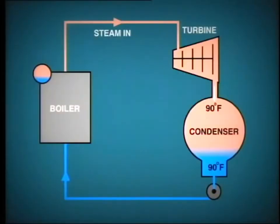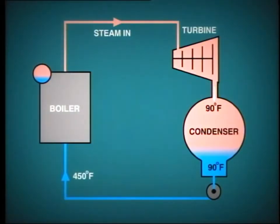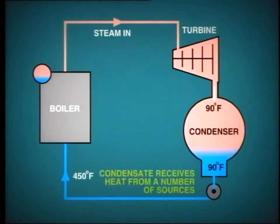By the time this condensate enters the boiler as feedwater, the temperature will be in the region of 400 to 500 degrees Fahrenheit, thus requiring less heat to be added in the boiler. During its passage from the condenser hot well to the boiler feedwater inlet, the condensate receives heat from a number of sources.